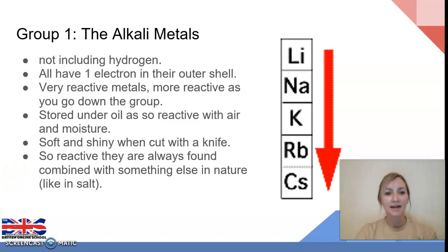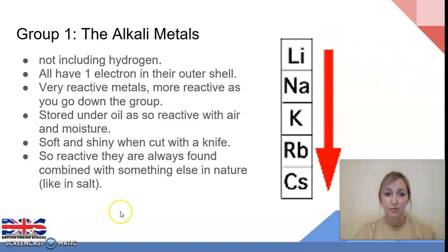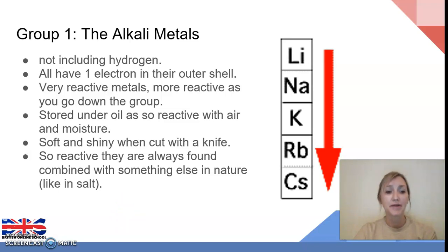Let's start off by looking at some facts about the alkali metals. First of all, they all have one electron in their outer shell — we learned that when looking at atomic structure earlier this year. They are very reactive metals, and they become more reactive as we go down the group. They also have to be stored under oil as they're so reactive with air and the moisture in the air around them.